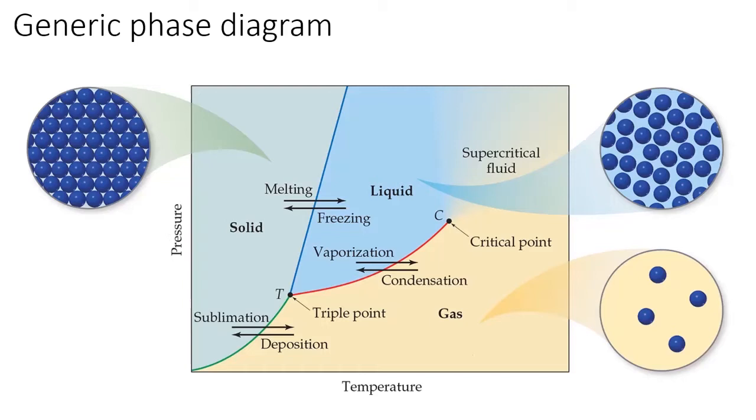If we know the temperature and pressure of the substance for the phase diagram, we can determine its phase by locating the coordinates.